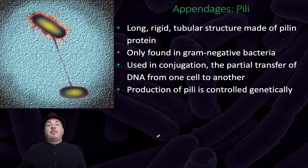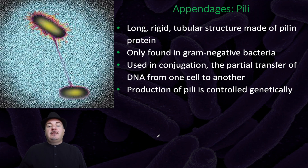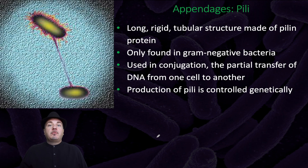We also have pili, which are long, rigid, tubular structures made of pilin protein. They're only found in gram-negative bacteria and are used during conjugation, which is a partial transfer of DNA from one cell to another. Production of pili is controlled genetically. We'll learn in a later video exactly how these pili are used in more detail.